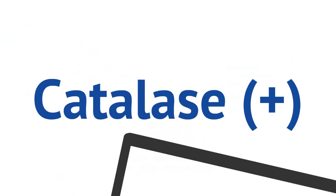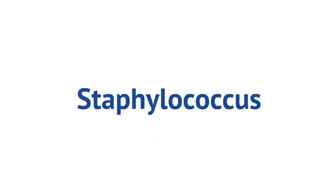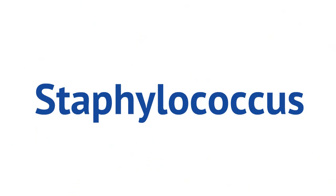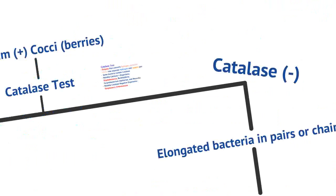Of the gram-positive cocci that are catalase-positive, they are further described as gram-positive spherical bacteria in grape-like clusters. When you get the description of gram-positive spherical bacteria in clusters that are catalase-positive, you know right away that this is called staphylococcus. Tests will give you the description and not the bacteria name, and ask you to figure out what bacteria it is. So remember: gram-positive, spherical, in clusters — staph.